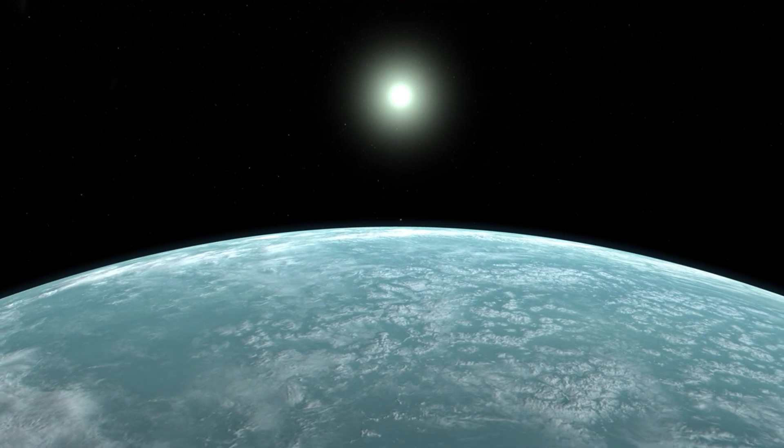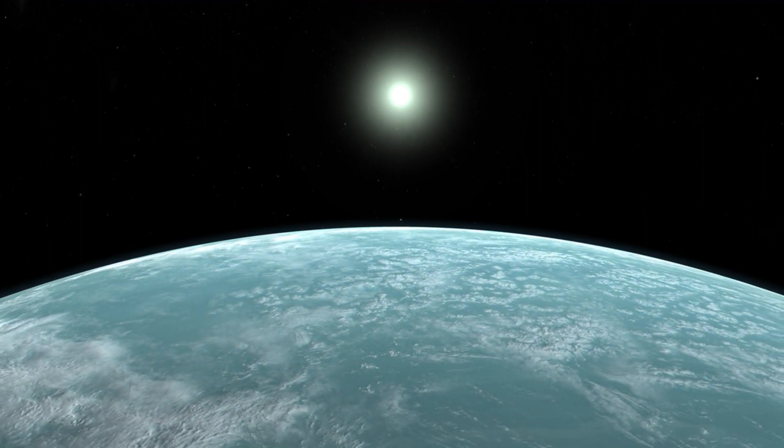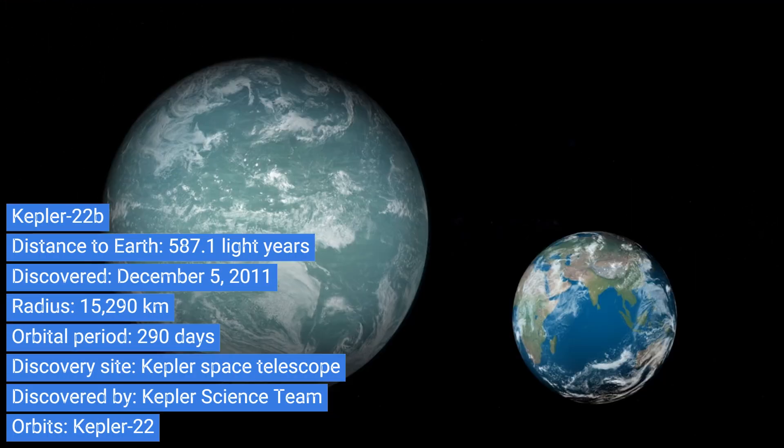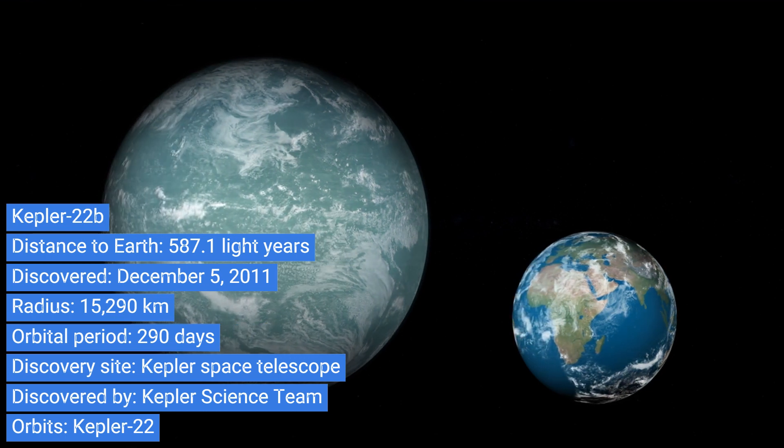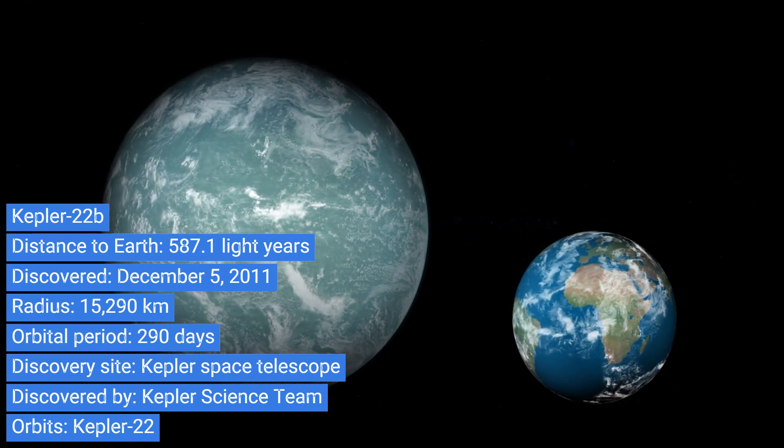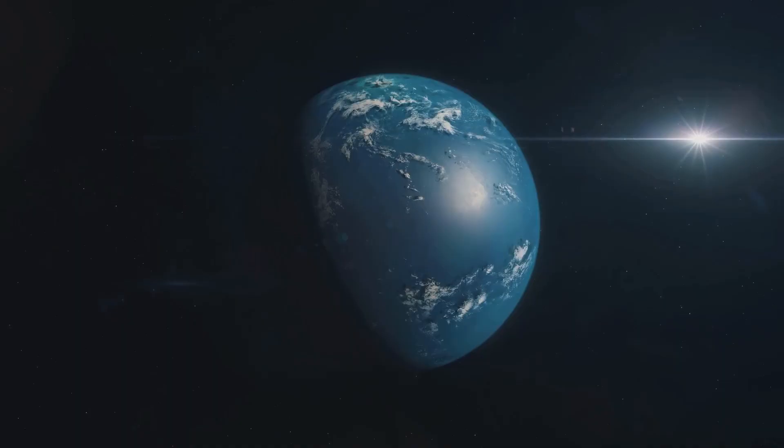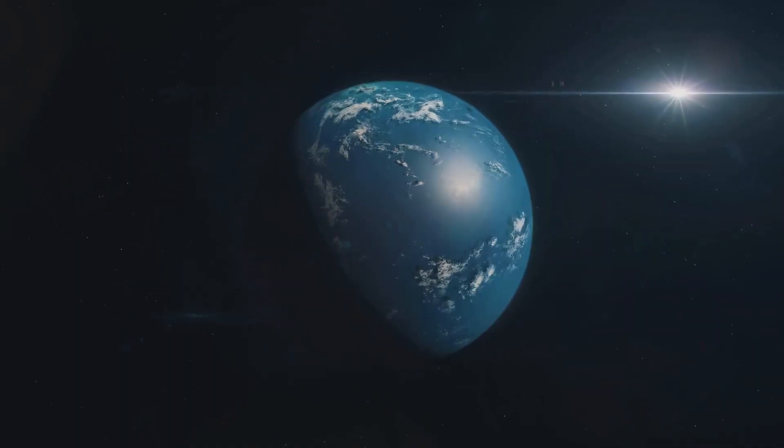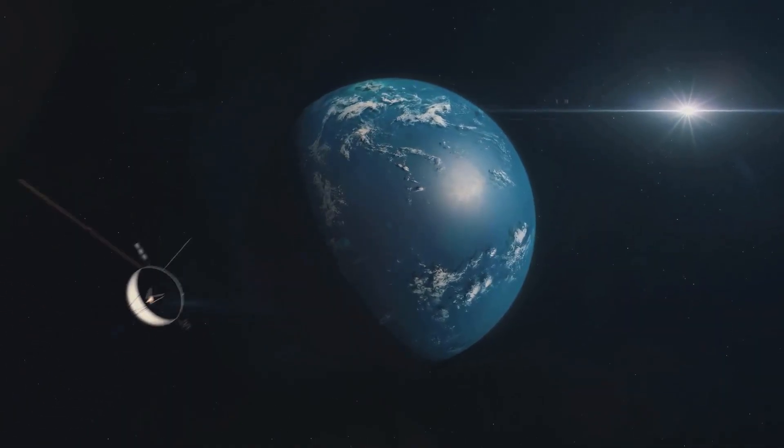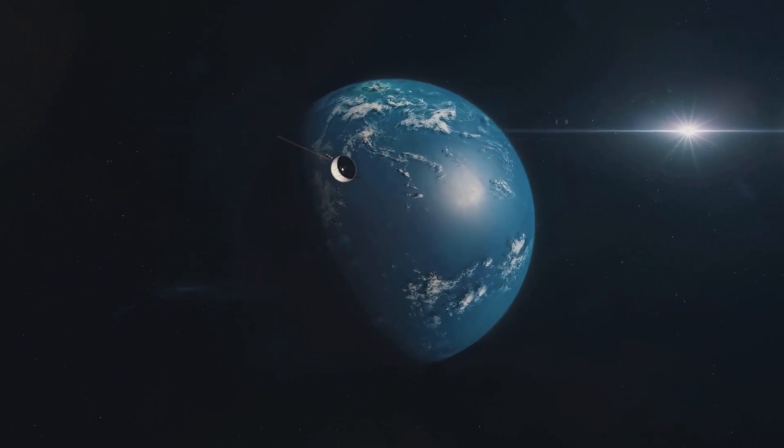First on the list is Kepler-22b, a planet that might be covered in oceans. Nestled snugly in the habitable zone of its star, this fascinating world is around 2.4 times the radius of Earth. Could it be a water world? Kepler-22b, a potential oceanic paradise, certainly makes a splash in our list.